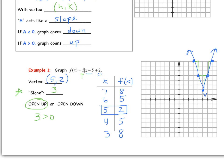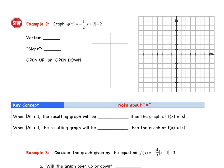Let's try another example. I want you to graph the function G of X equals negative one-half times the absolute value of X plus 3, minus 2. State your vertex, your A value, whether it opens up or down, give some ordered pairs, and draw your graph. Go ahead and give it a try.